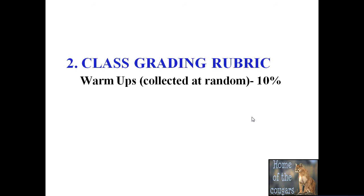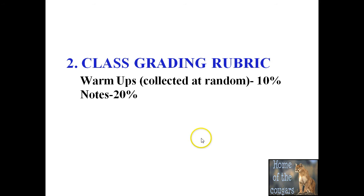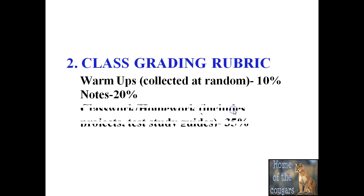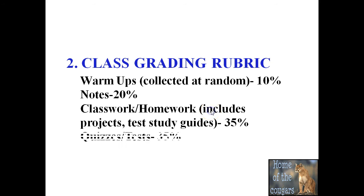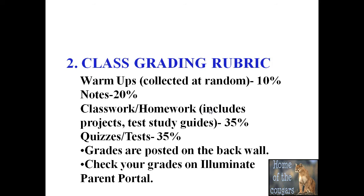Let's talk about the grading rubric. Warm-ups are worth 10% of your grade and are collected at random. Notes are worth 20% of your grade. Classwork, homework, projects, and study guides are worth 35% of your grade, and quizzes and tests are also 35% of your grade. Grades are posted on the back wall, and check your grades on Illuminate Parent Portal.